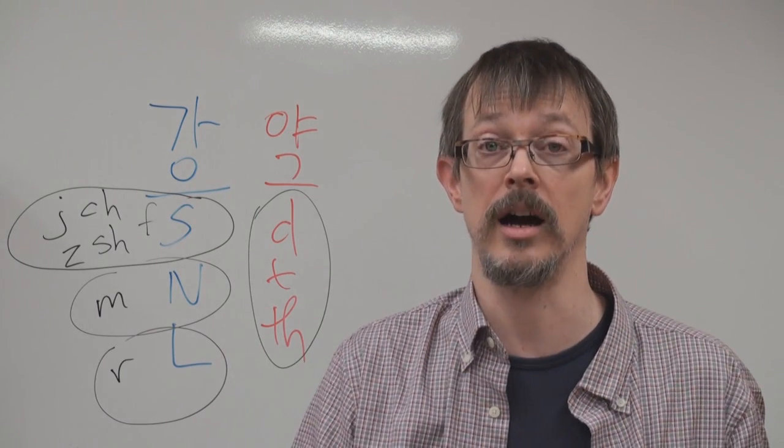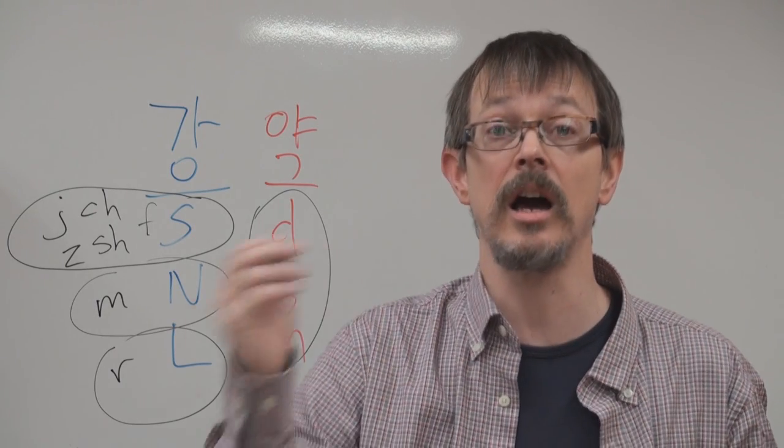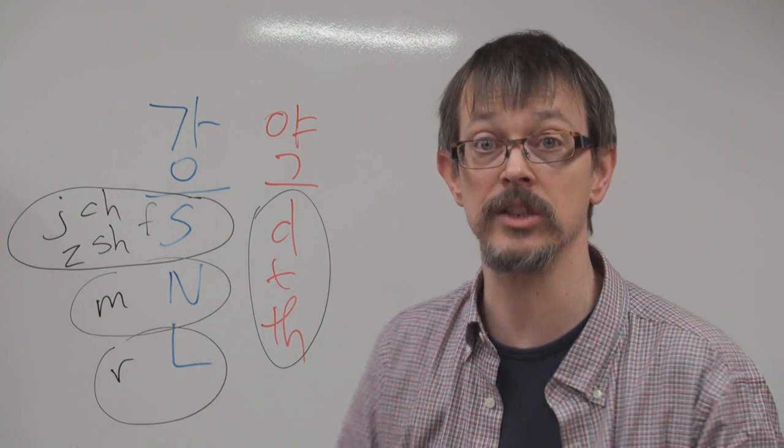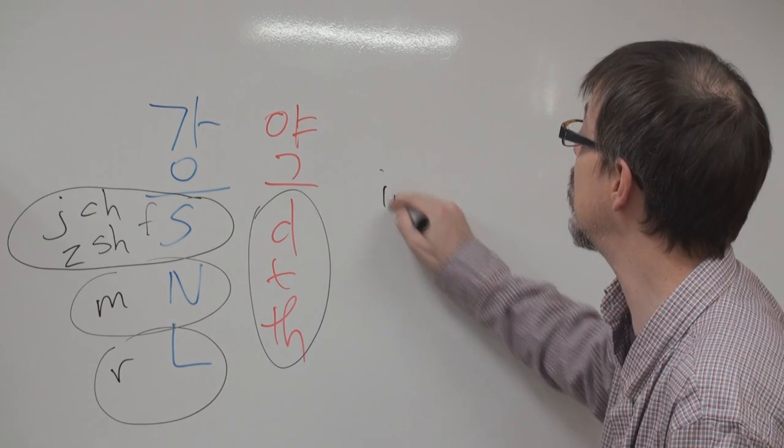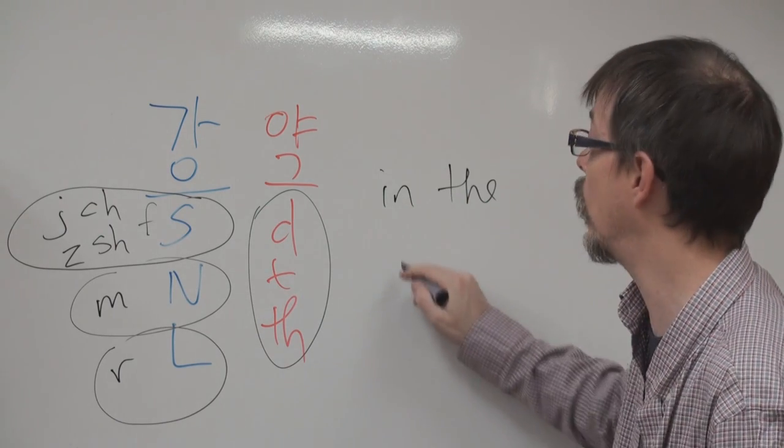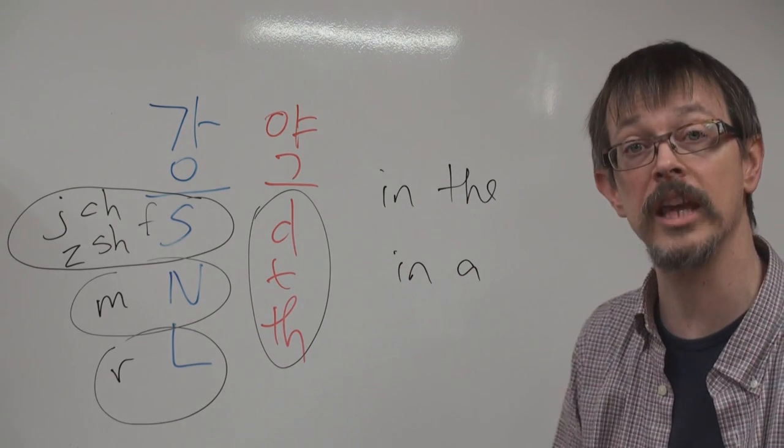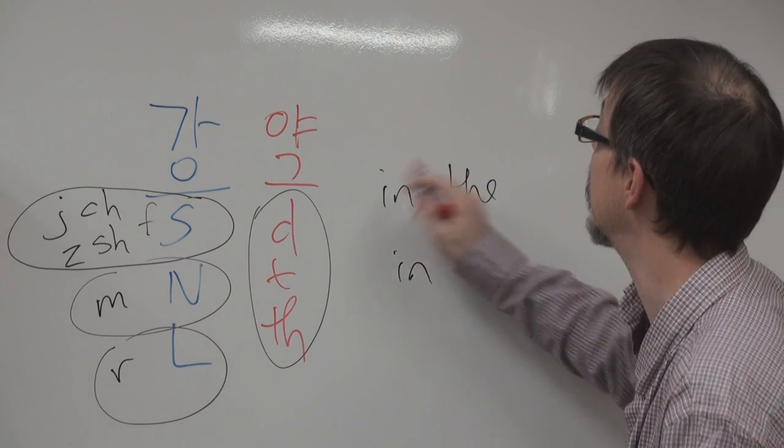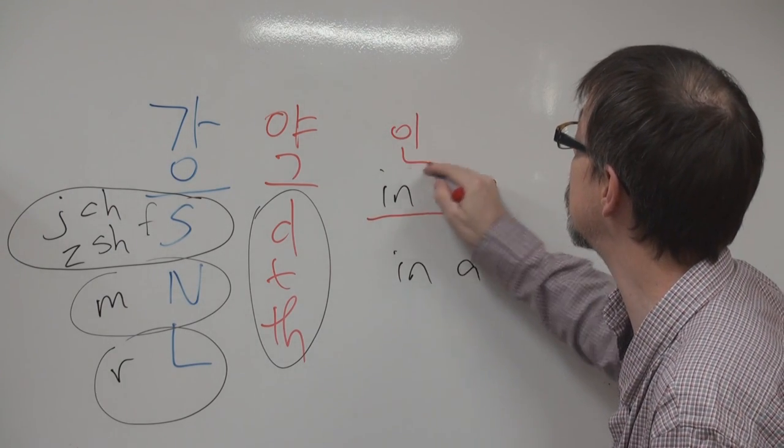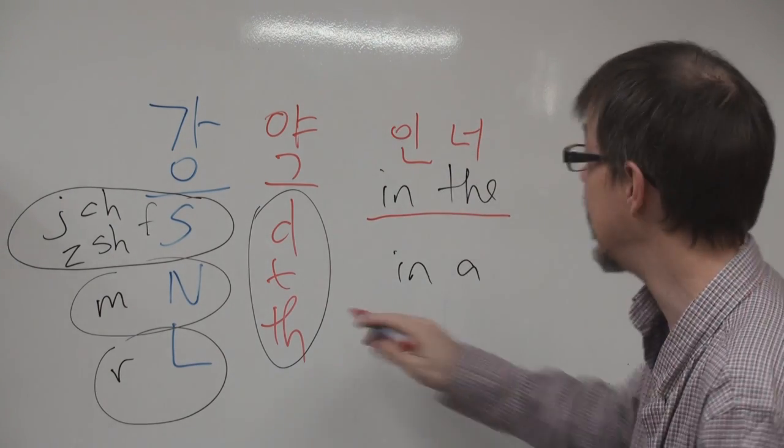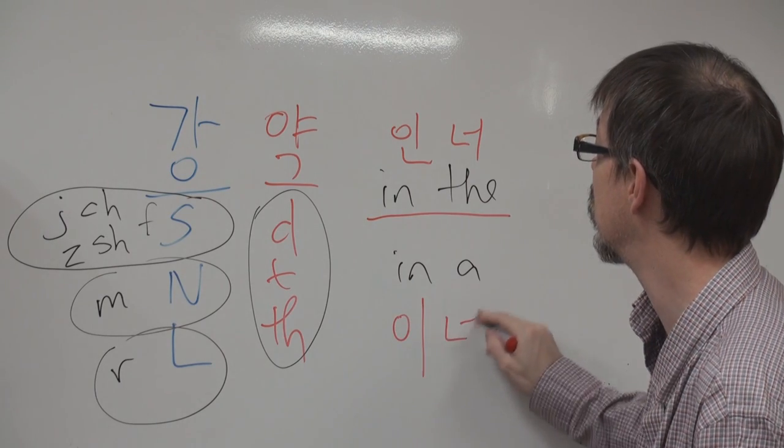In the car 하지 않고, in the car. 그렇게 하죠. 근데 여기도 중요하세요. In the 하고, in a 어떻게 구별할 수 있어요? 바로 이렇게. In the would be in na. In a would be in na.